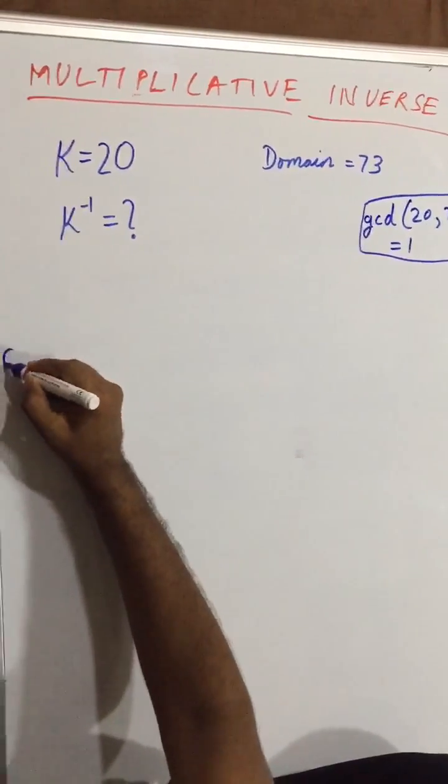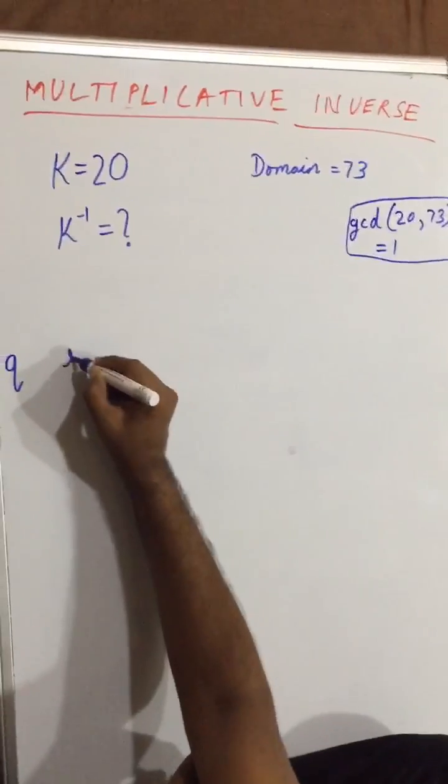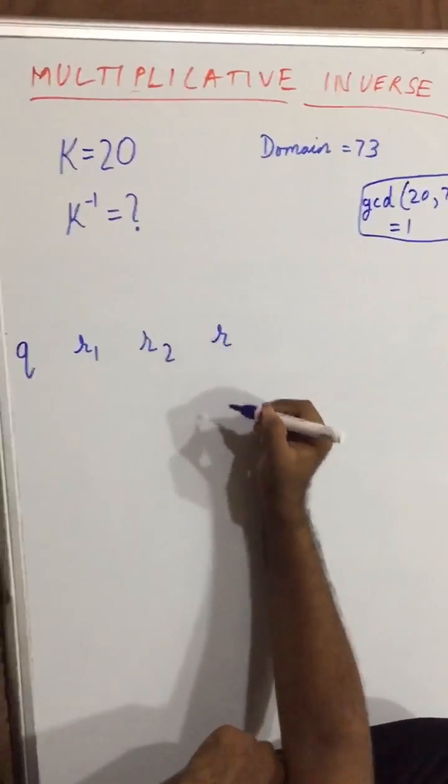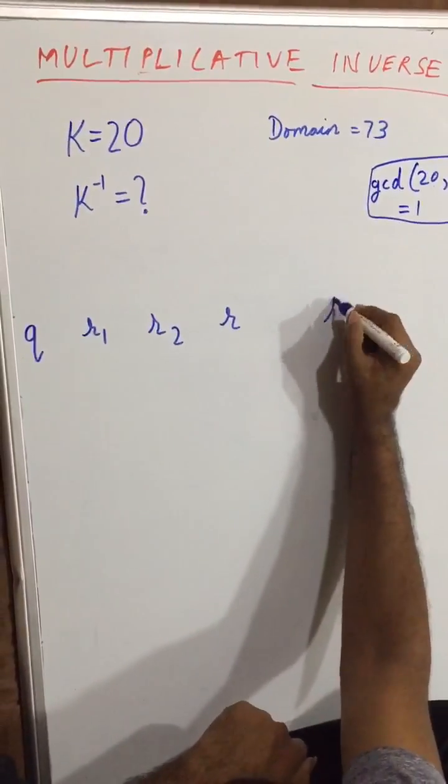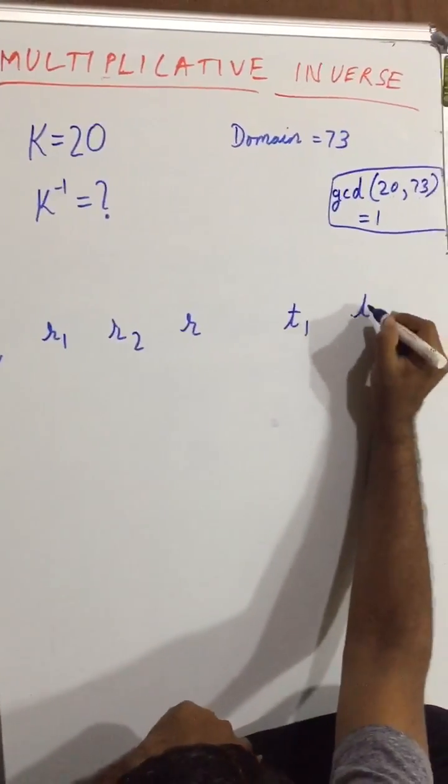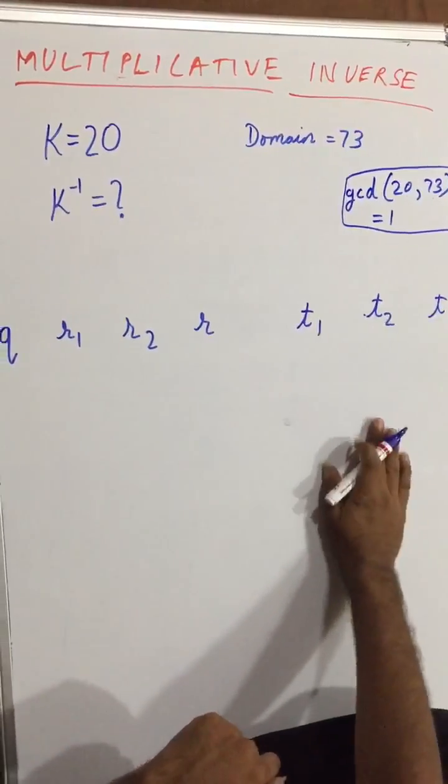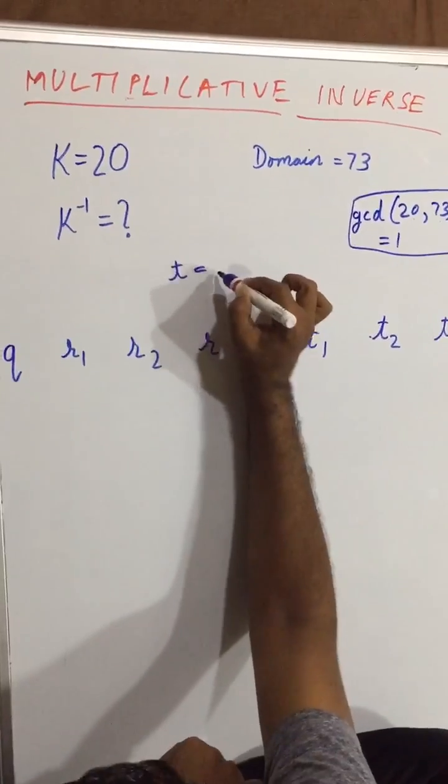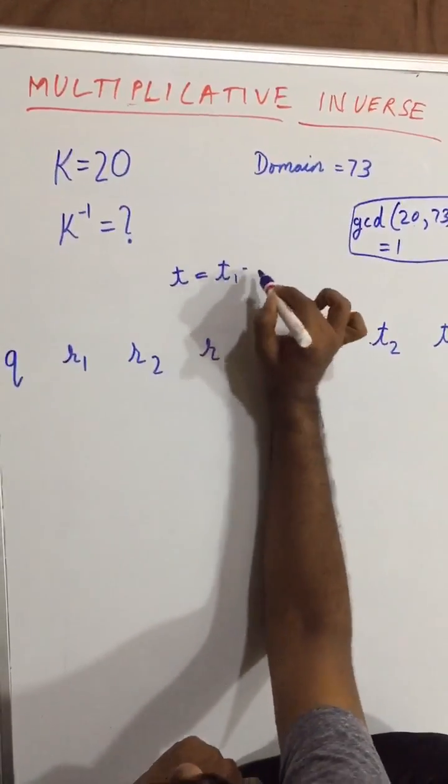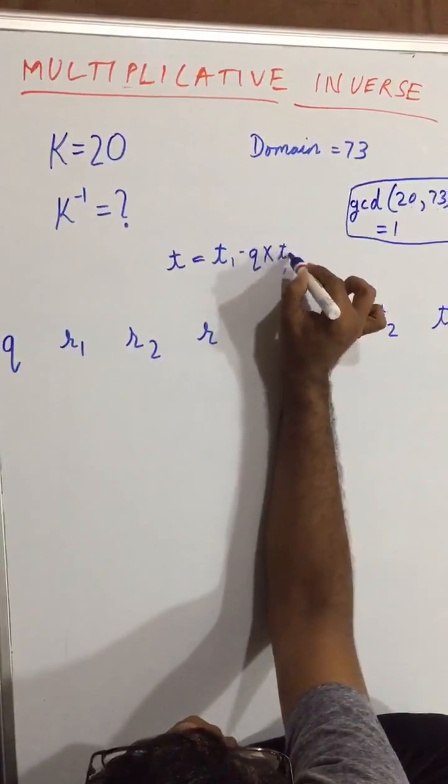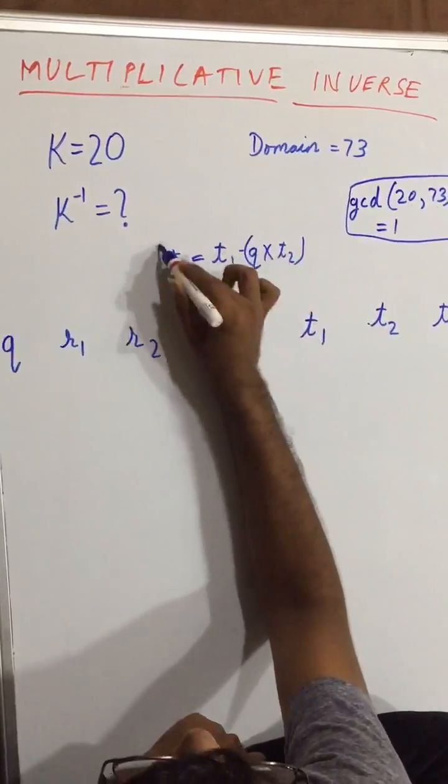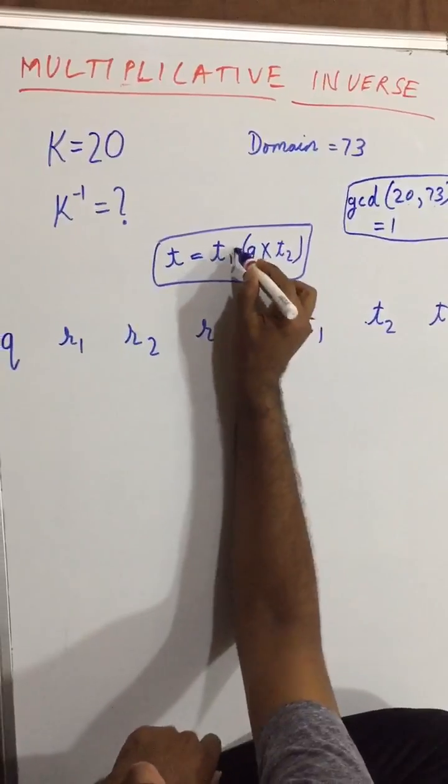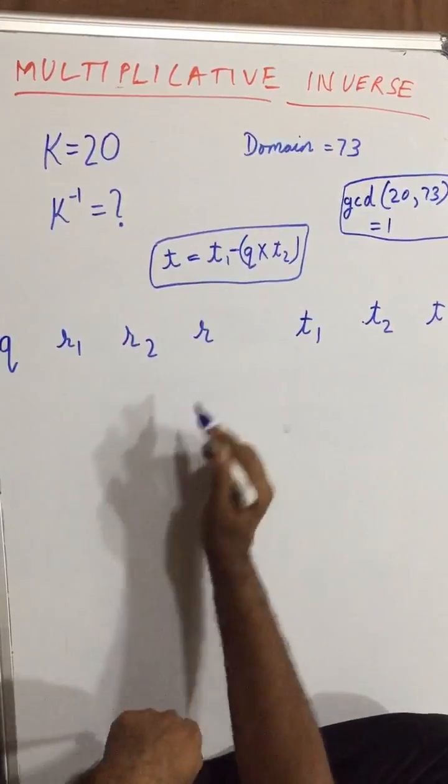First we had q, we had r1, we had r2, we had r, and the extended thing we have over here is t1, t2, and t. Now to calculate t value we have formula: t is equal to t1 minus q into t2. This is the formula to calculate t.